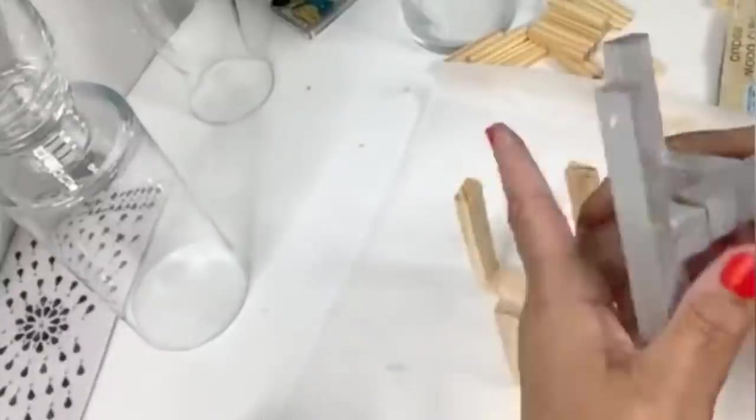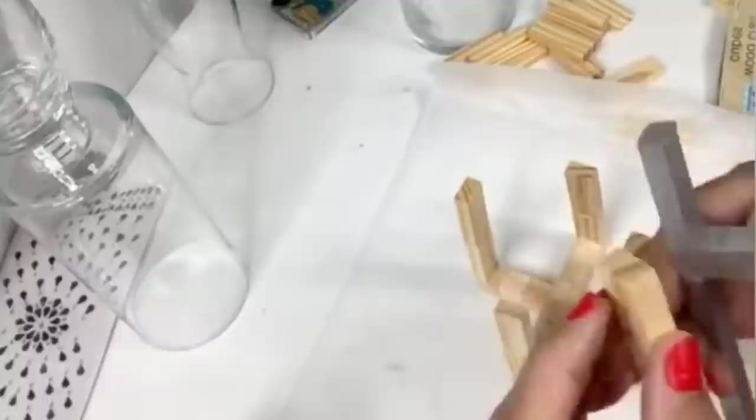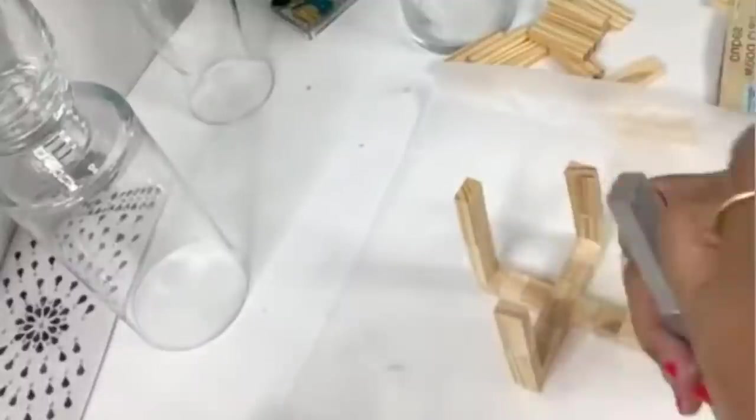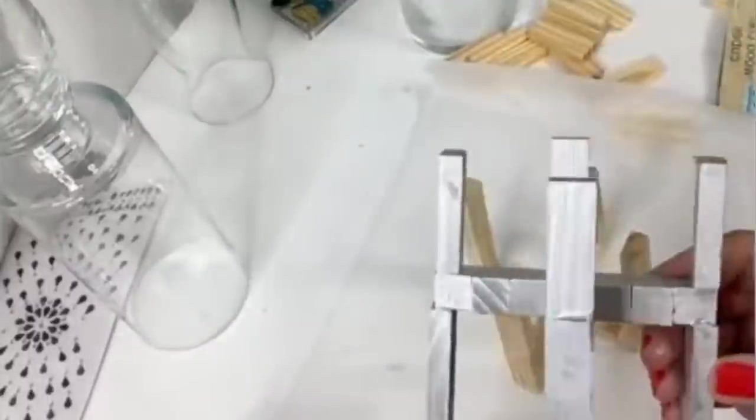Once it dries, you just flip it over and then just add a tower block like this has been flipped over. Just add a tower block to each part to make a leg like that. It's simple.